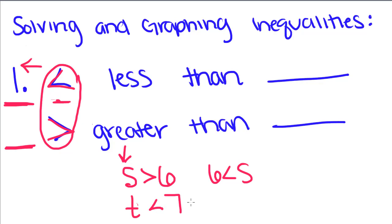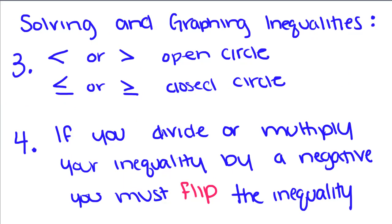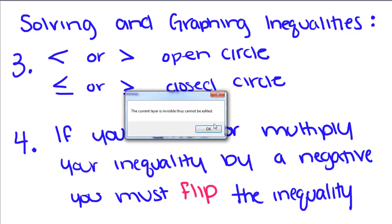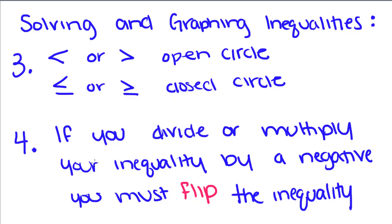When we solve our inequalities, we're going to graph them, and you always graph the solution to an inequality on a number line. If you have an inequality that's less than or greater than, when you graph it you're going to use an open circle. That's not going to make sense right now, but it will in a minute when we go on to graphing. But if you have less than or equal to, or greater than or equal to, it's going to be a closed circle.